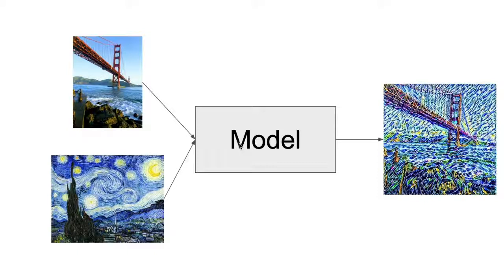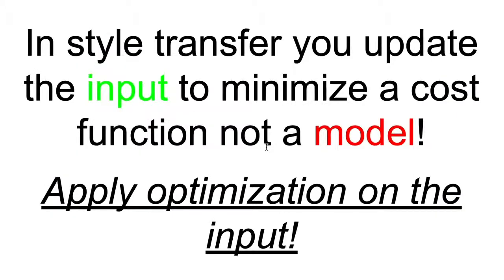So, instead of updating the model to decrease a loss function, we are updating the input itself to decrease a loss function. In style transfer, you update the input to minimize a cost function, not a model. So, we apply optimization on the input.